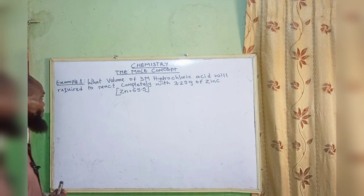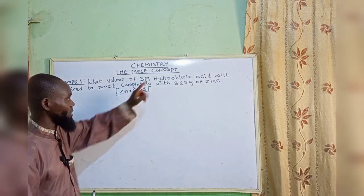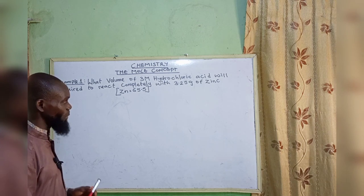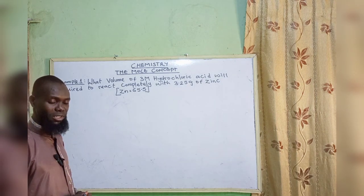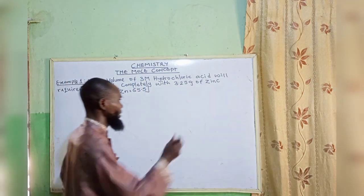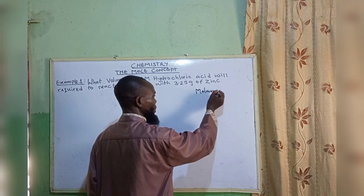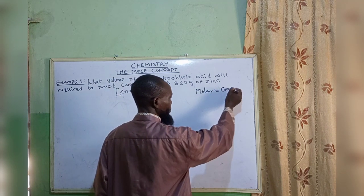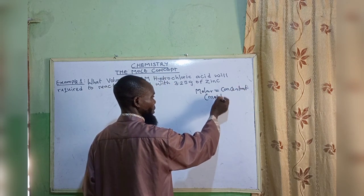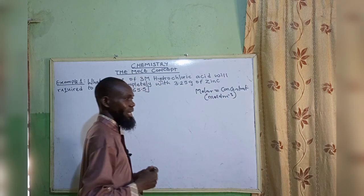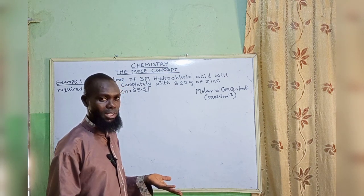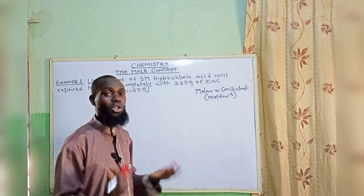Let's look at example one. What volume of 3 molar hydrochloric acid is required to react completely with 3.25 grams of zinc? One thing we have to note is this: when we say molar, the word molar is synonymous to concentration. Concentration has a unit of mole per dm³, so molar also has a unit of mole per dm³.